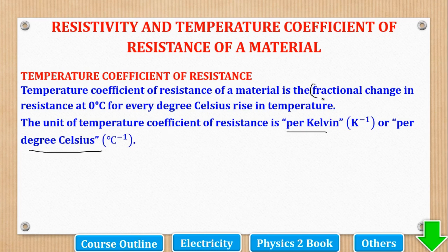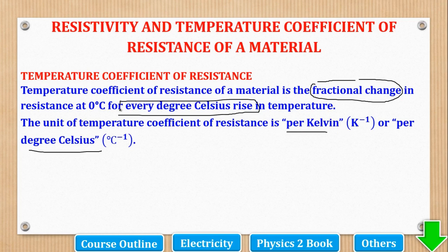The SI unit of TCR is per Kelvin or per degree Celsius. The fractional change in resistance has no unit, but the 'for every degree rise in temperature' part gives the SI unit. Any change in temperature, whether in degrees or in Kelvin, will be the same.